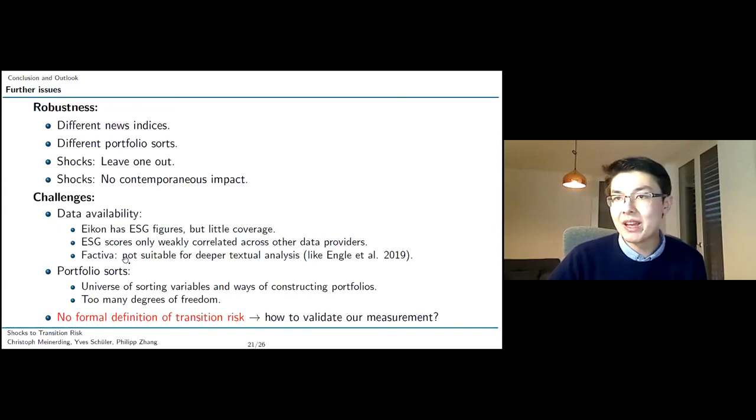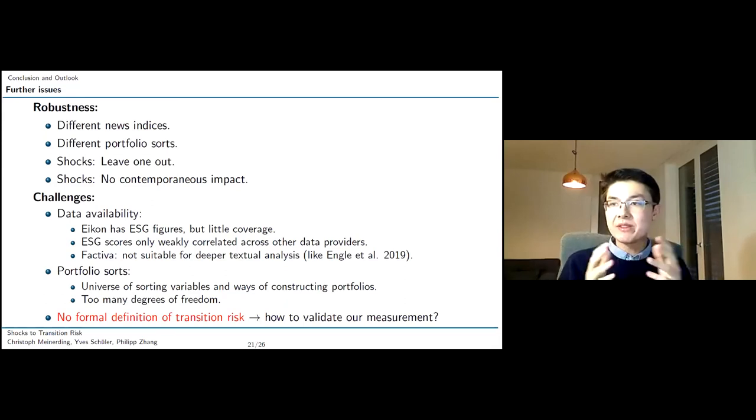Another point is we use Factiva in a fairly simplistic way. Factiva wouldn't allow us to download articles in larger scale or to convert them into metadata format. So we don't have methods available to conduct more sophisticated textural analysis using modern machine learning techniques. On the other hand, due to the robustness of our news index to different choices of dictionaries, one might actually expect that these results don't really depend on how sophisticated the selection algorithm actually is. So in that case, it may be true that simpler approach may yield at least as good results. And of course, portfolio sorts, that's always kind of a messy business. There are many degrees of freedom. But in the end, the main challenge is there's simply no formal definition of transition risk available on the academic market right now. So we don't really have a way to validate our measurements.